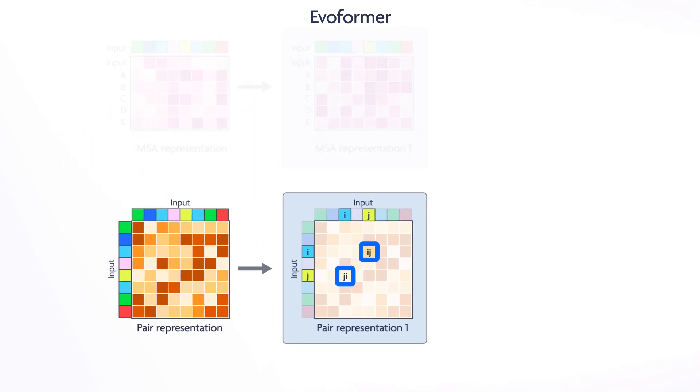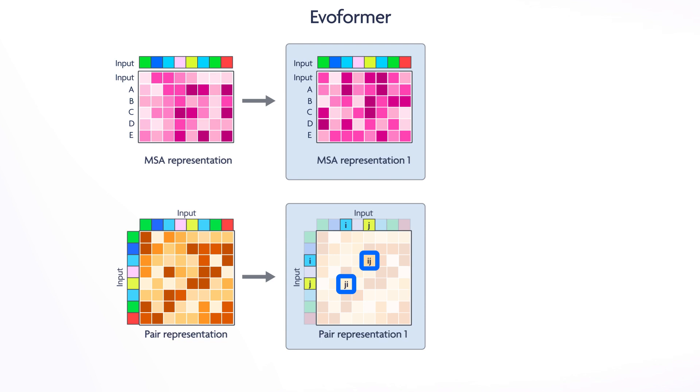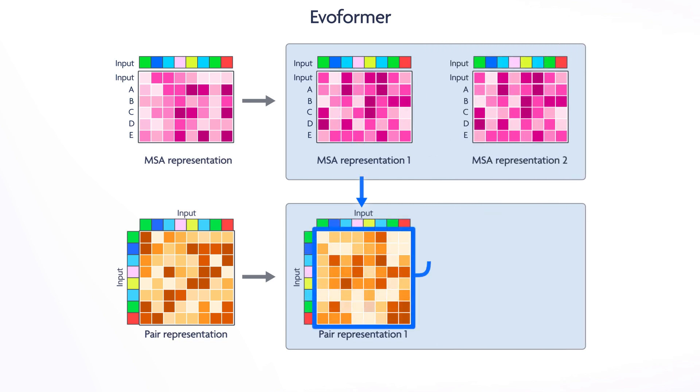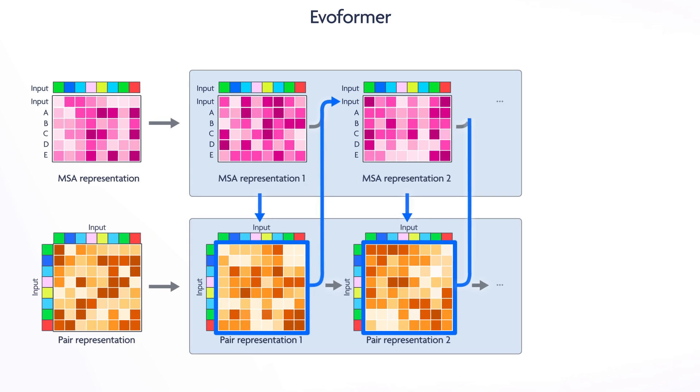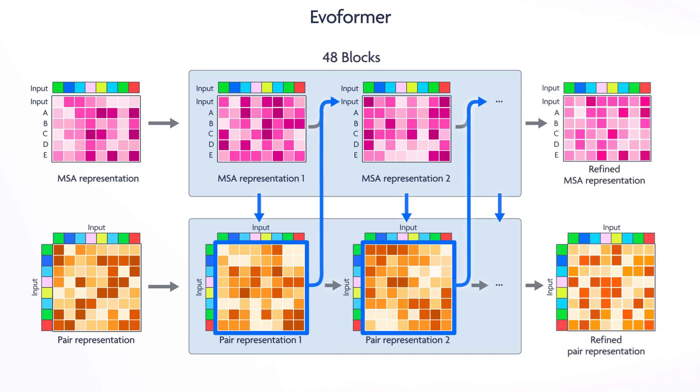So how and where do the two towers communicate? Before the pair representation calculates the triangulations on each edge, it considers the updated MSA residue relationships and updates each edge accordingly. The results of the pair representation data is then used in the MSA's row-wise weighting of pair relationships in the input sequence prior to its next round of row and column-wise evaluations. These individual and cross-communicated calculations happened 48 times in the Evoformer before creating the refined models of the initial MSA and pair representations.